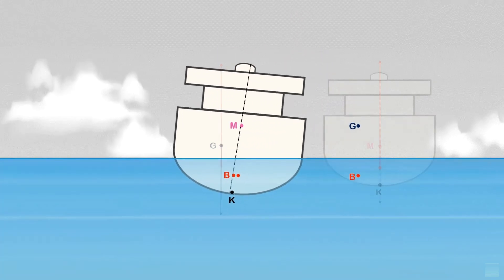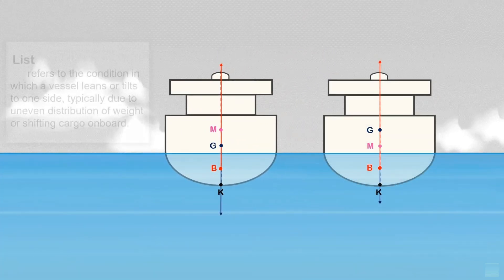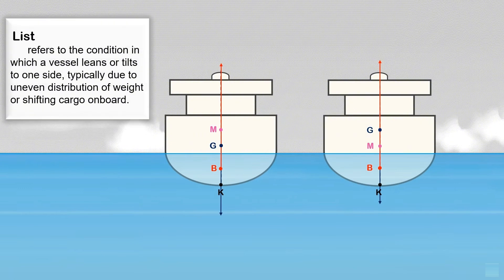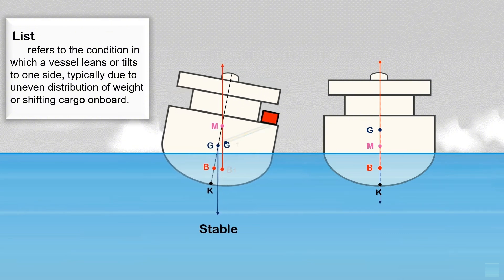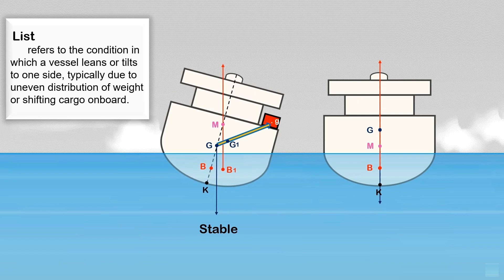Let us compare these two conditions. List refers to the condition in which a vessel leans or tilts to one side, typically due to uneven distribution of weight or shifting cargo on board. For example, if the ship is in stable condition and a weight is added to one side, the ship's center of gravity will move towards the center of gravity of the weight being loaded. The new center of gravity is at G1, which is off the centerline.